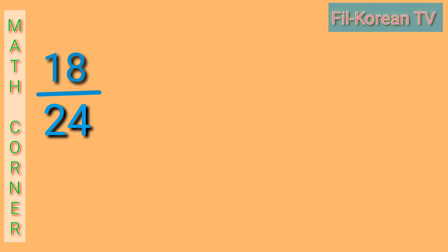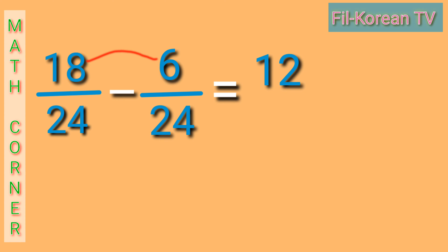Okay, let's have another example. 18 twenty-fourths minus 6 twenty-fourths. Okay, let us subtract the numerators. 18 minus 6 equals 12. And then copy the denominator 24.